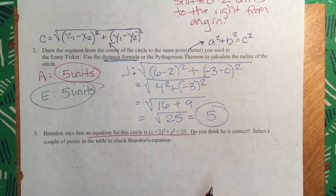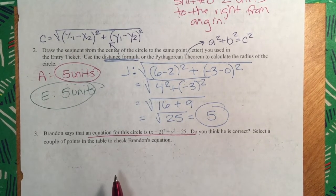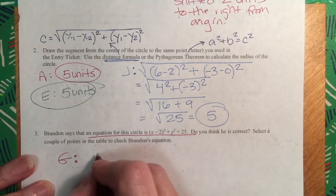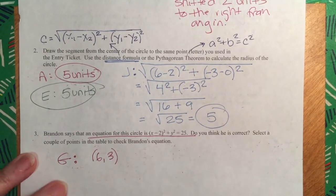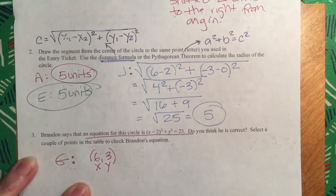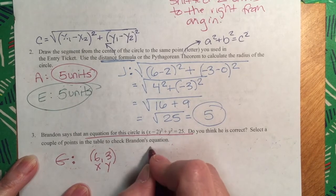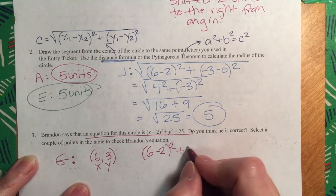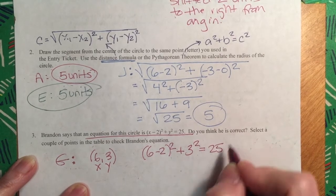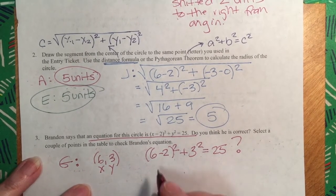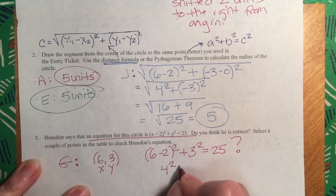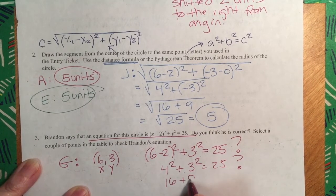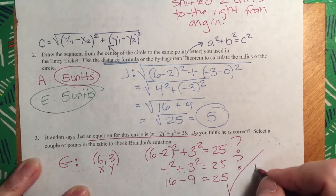We're going to pick a point and check it. Let's pick point G. Point G is 6 comma 3. Let's check it in the equation. X minus 2 would be 6 minus 2, squared, plus the Y squared — that's 3 squared — and that has to equal 25. 6 minus 2 is 4 squared, plus 3 squared. Well, 16 plus 9 — does that equal 25? Yes, he's correct.